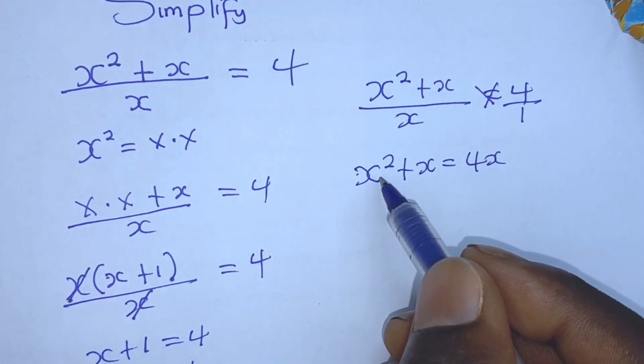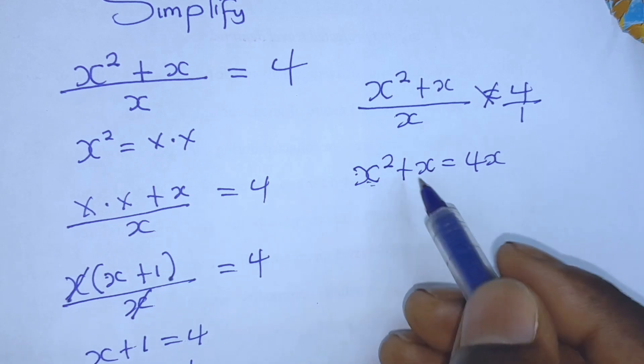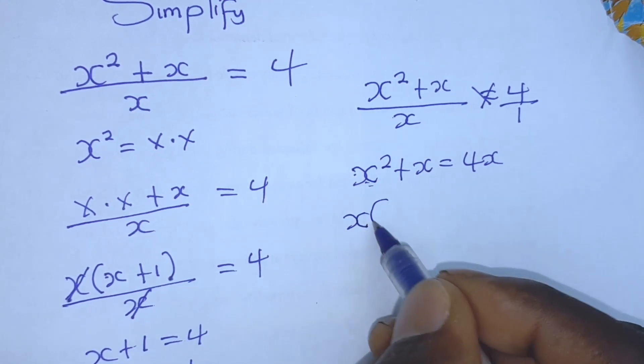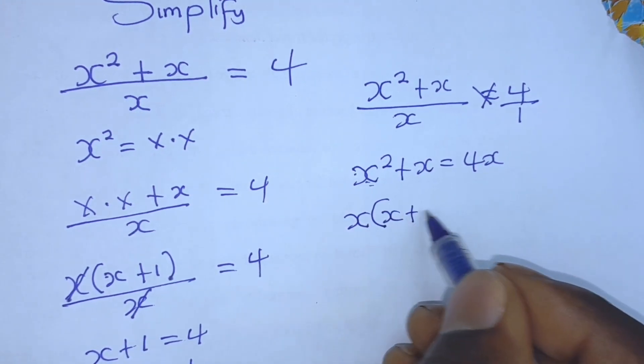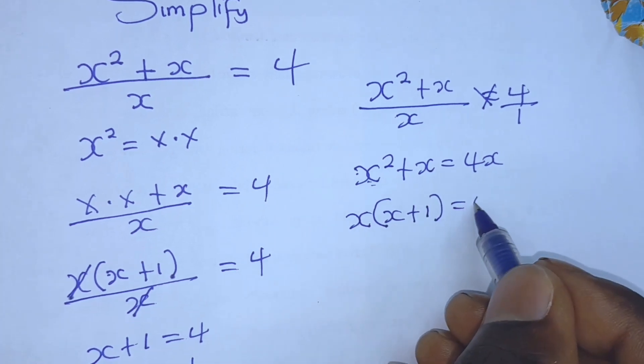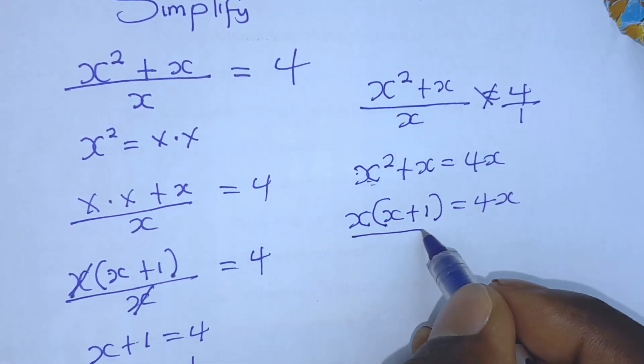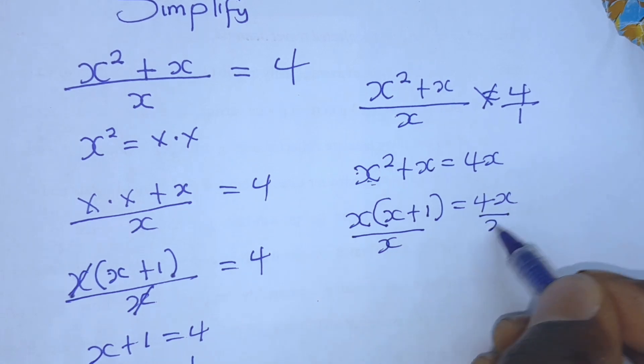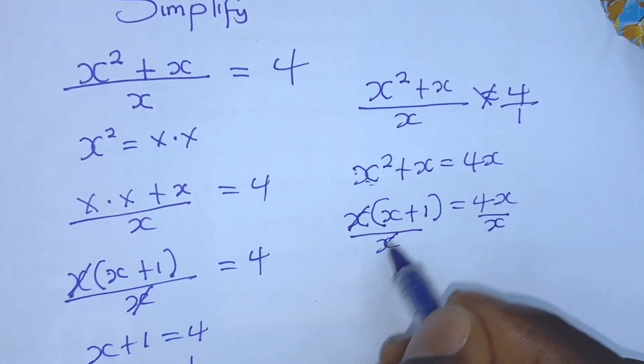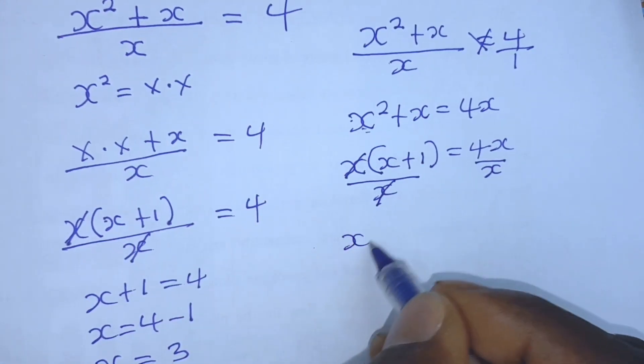We can factor x outside since we have x in common here. x in bracket x plus 1 is equal to 4x. We can divide both sides by x. Here we have x. x cancels x.